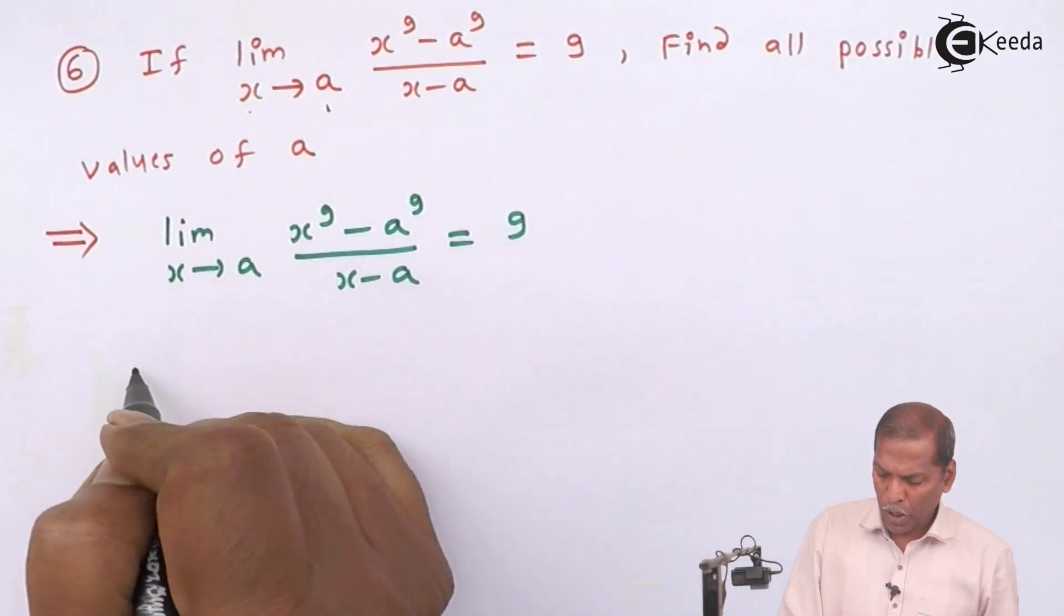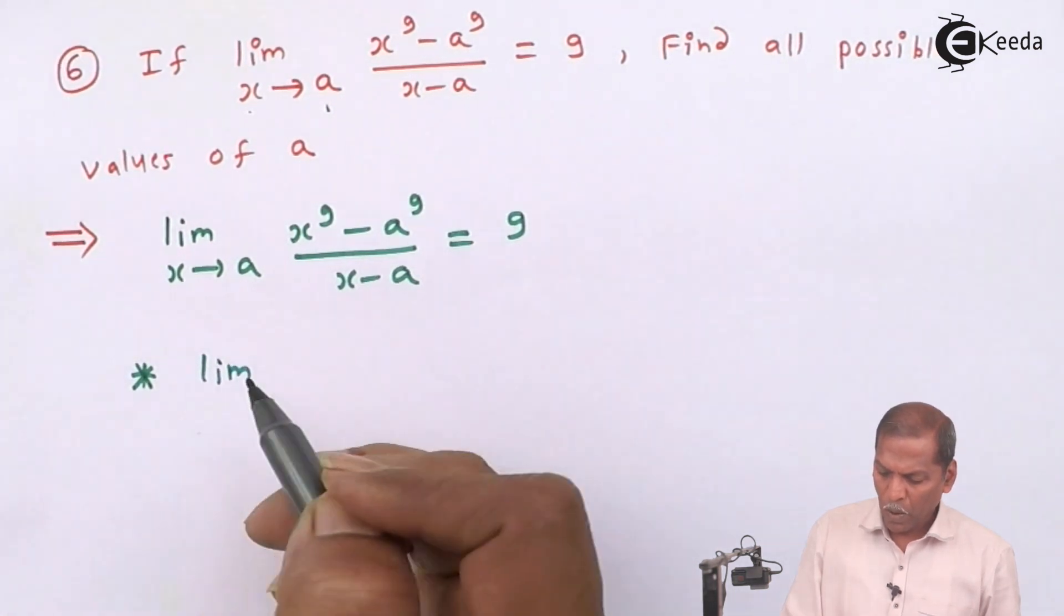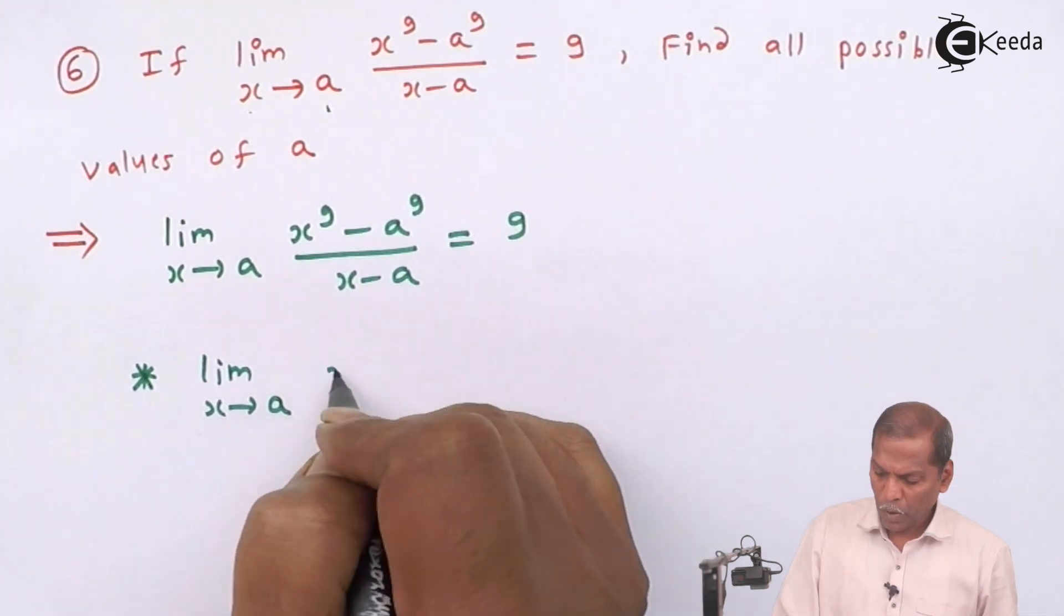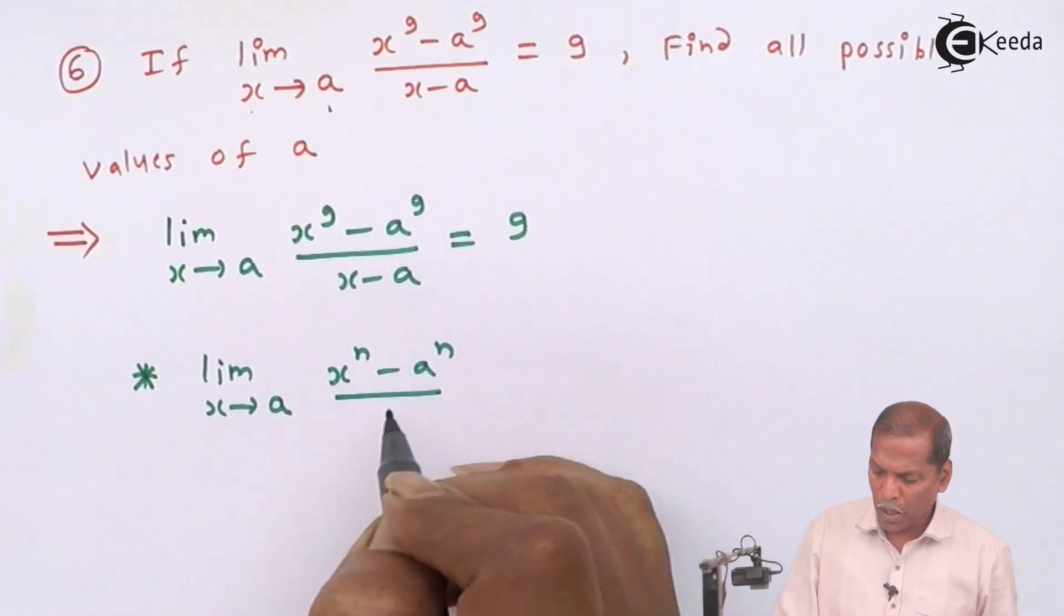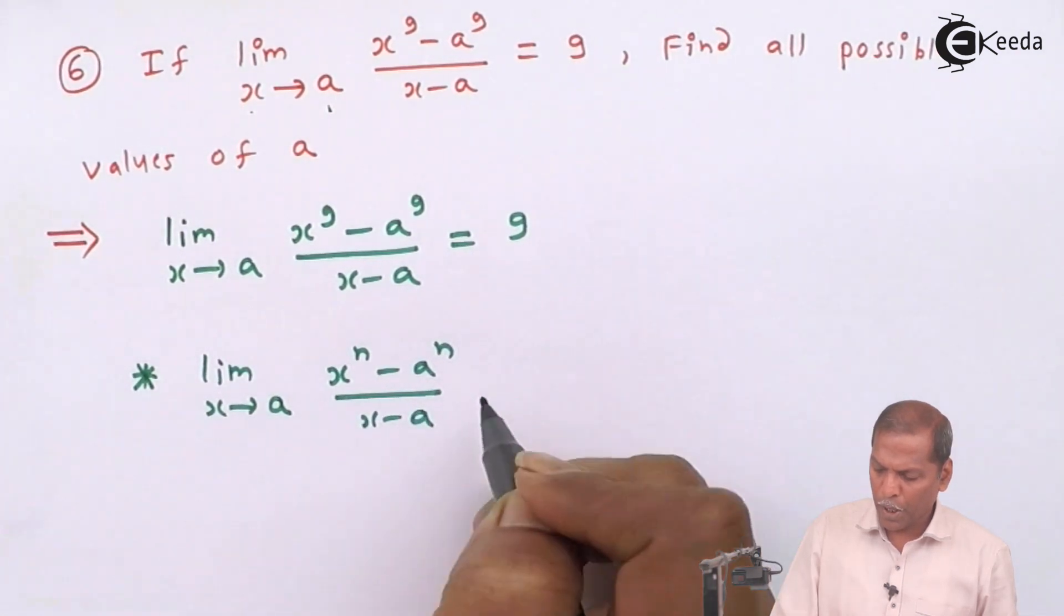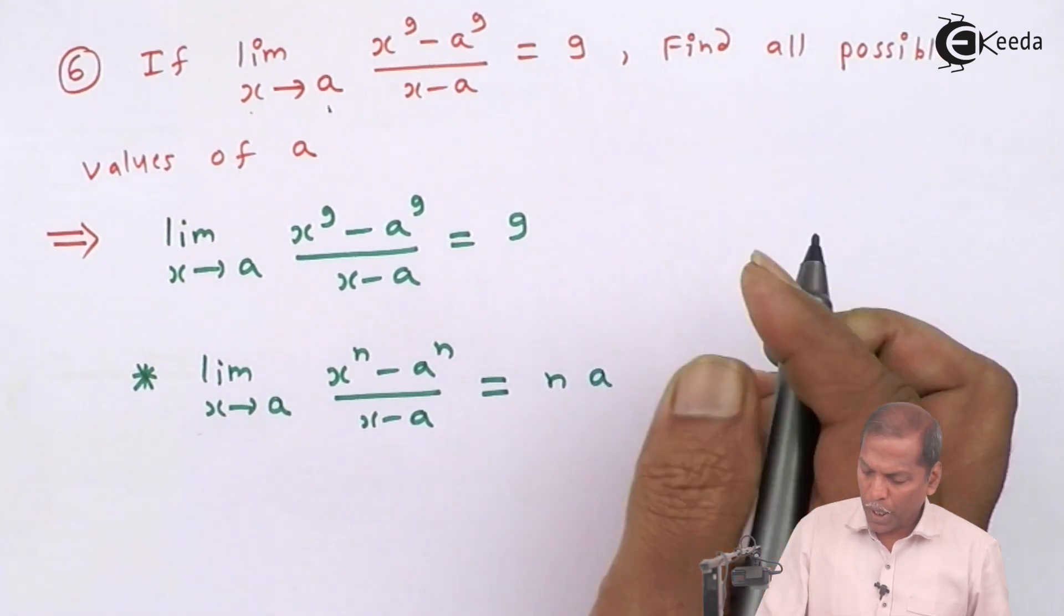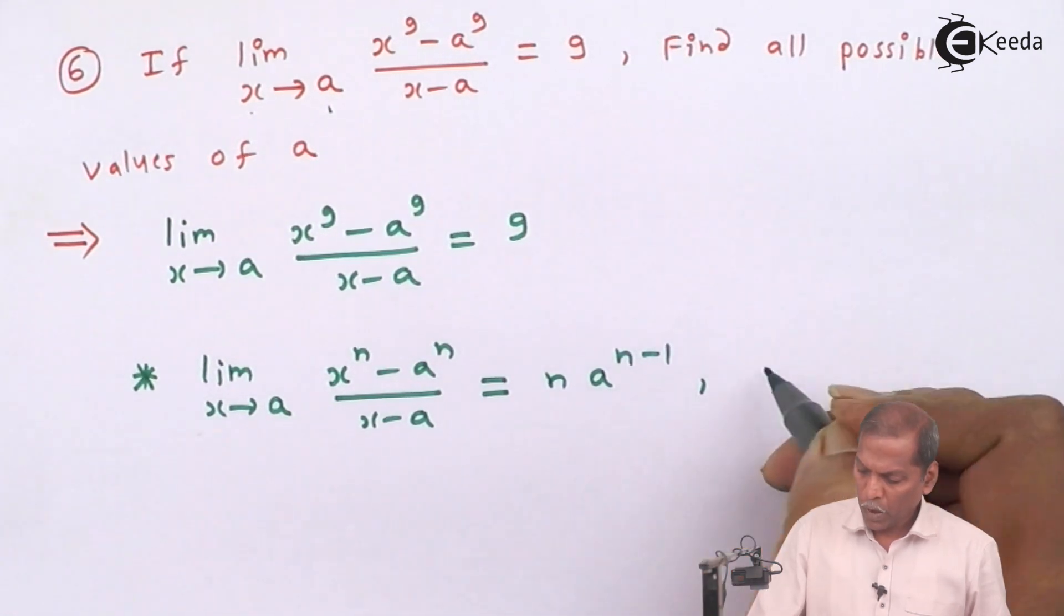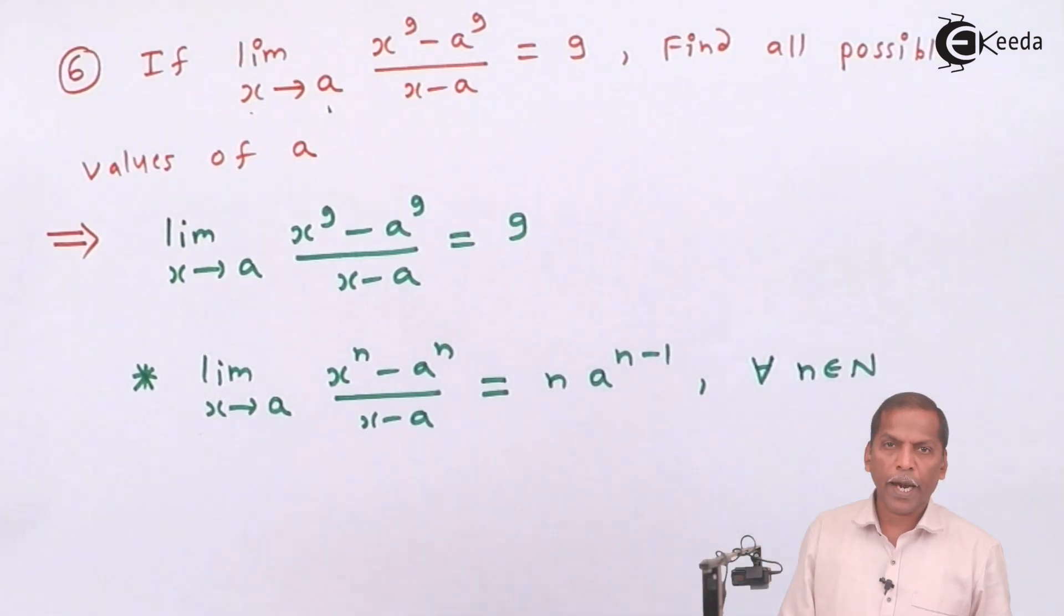So here we have to use the rules of limit that limit x tends to a, x raised to n minus a raised to n upon x minus a is equal to n times a raised to n minus 1. And this rule holds for all n belongs to set of natural numbers.